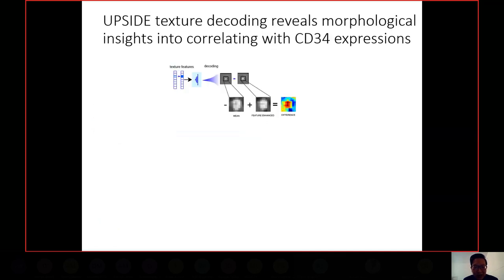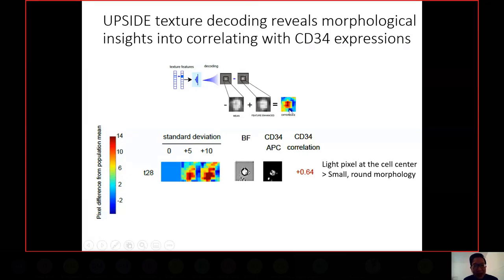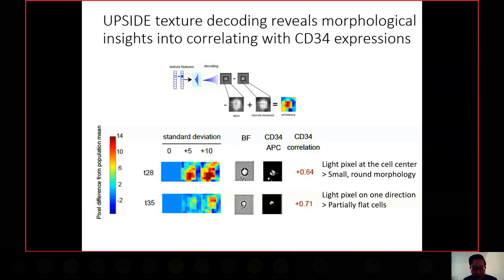Looking at the texture of these cells, we show the pixel map difference between the pixel-enhanced and the mean picture of the cells. Many cells with high CD34 correlation carry a texture with very high bright pixels in the cell interior — they appear really bright or glossy in brightfield, consistent with their smaller, round morphology. We're also finding enriched texture features that are polarized in pixel intensity, with brightness only on one side of the cell and darker pixels on the other, suggesting cells that are flat on one end and more raised on the other.